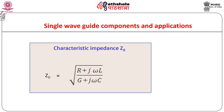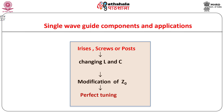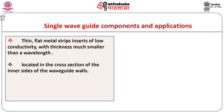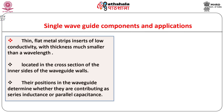We know that the characteristic impedance Z0 of a coaxial cable plays an important role in devices based on impedance matching techniques. It is given by the expression as shown. Sometimes it is needed and possible to modify the characteristic impedance by varying the values of L and C to tune the waveguide for elimination of standing waves if any due to load mismatch. The requirement of changing L and C can be fulfilled either using iris or screws or post in the waveguide. Thin flat metal strip inserts of low conductivity with thickness much smaller than a wavelength are known as iris, located in the cross section of the inner sides of the waveguide walls. Their positions in the waveguide determine whether they are contributing a series inductance or parallel capacitance.